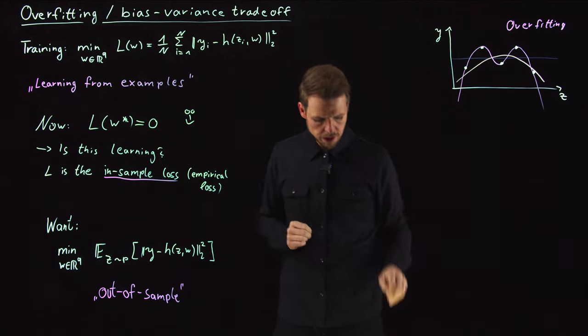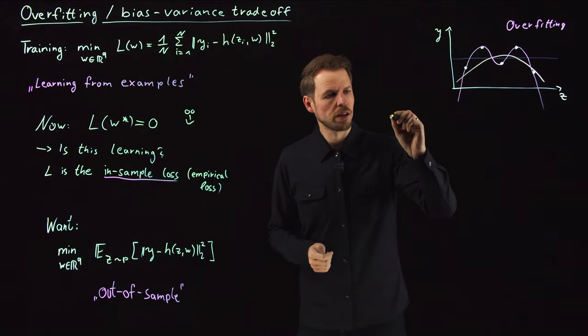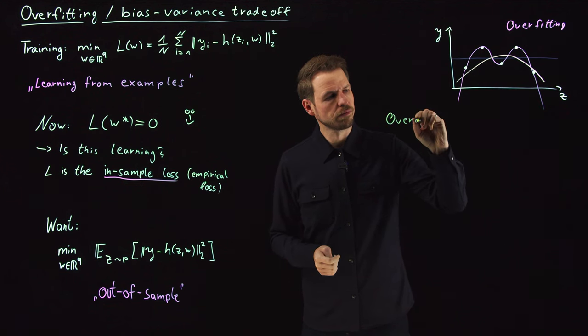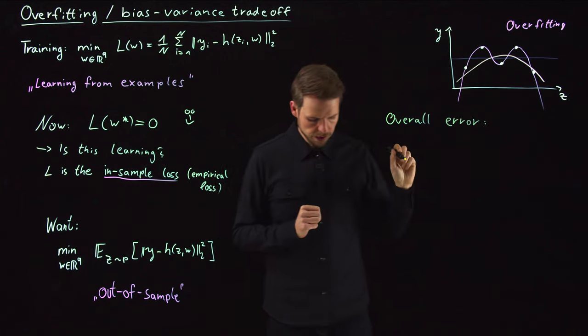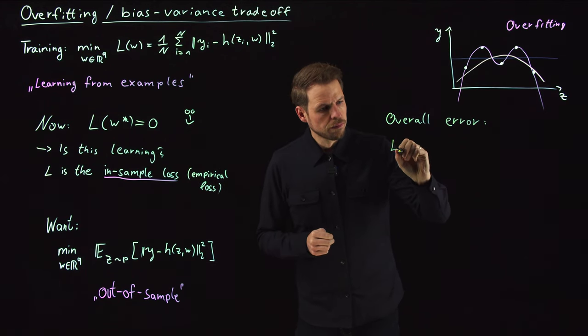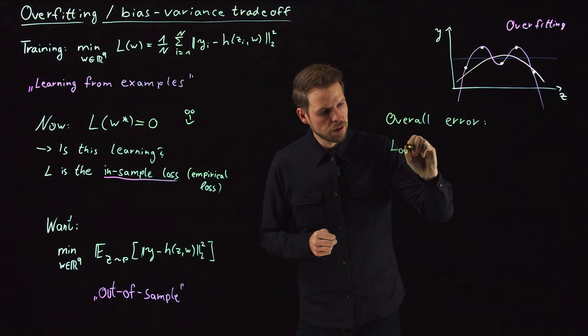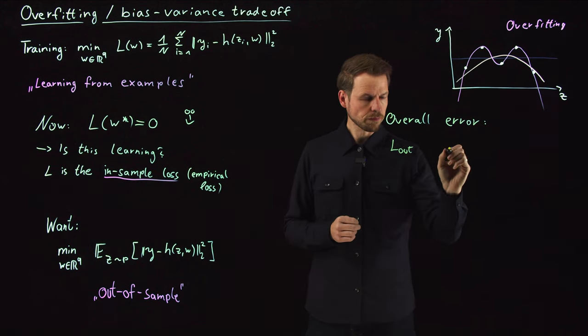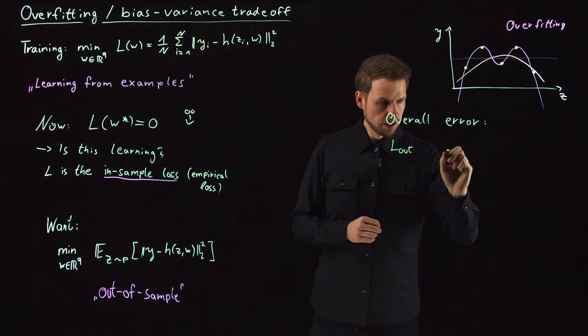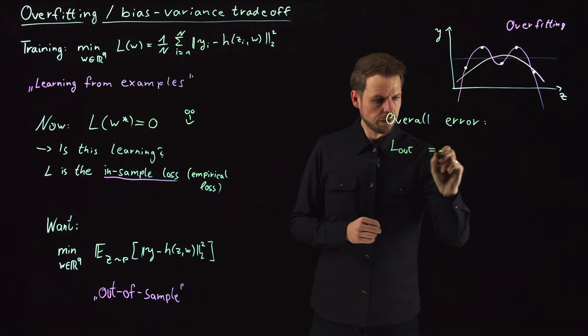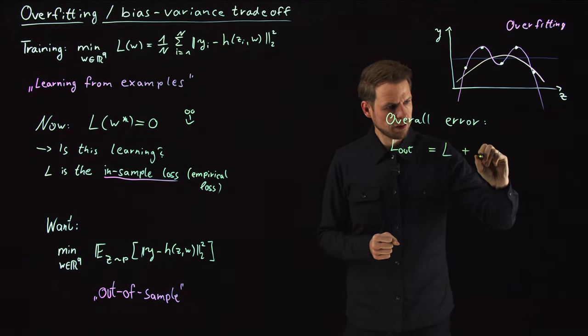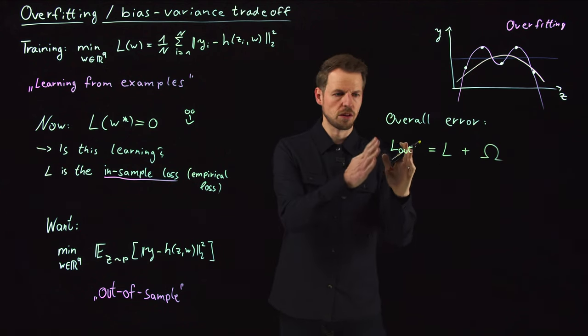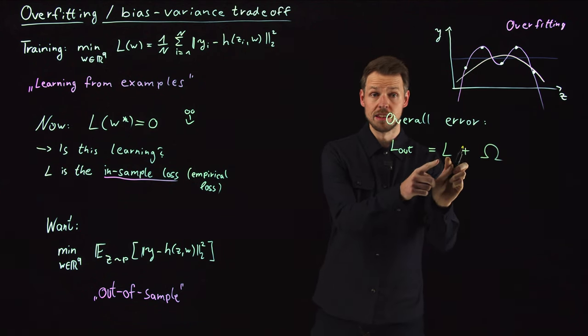You should tailor your model complexity to the data that you have, and not necessarily to the complexity of the underlying data structure. If you don't have the data, don't go for these high-dimensional models. To make this a bit more precise, what we can do is we can write what the overall error actually is.